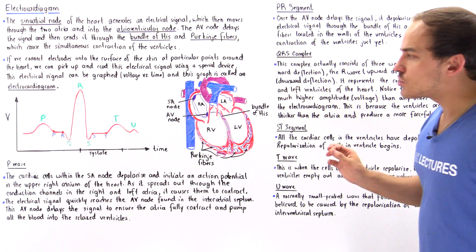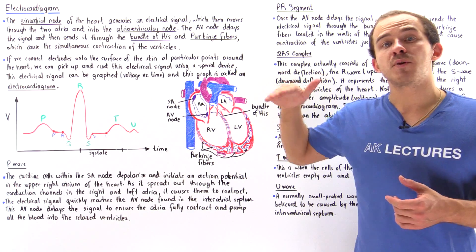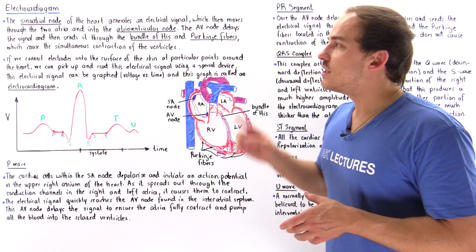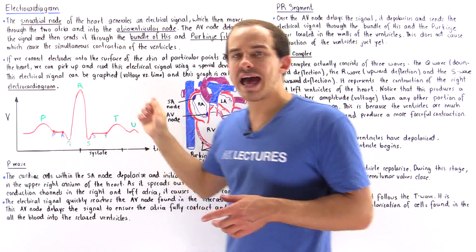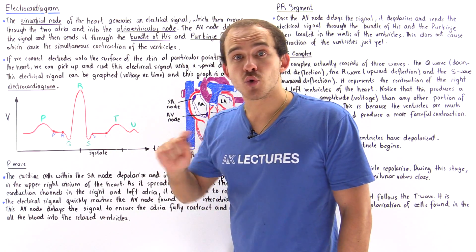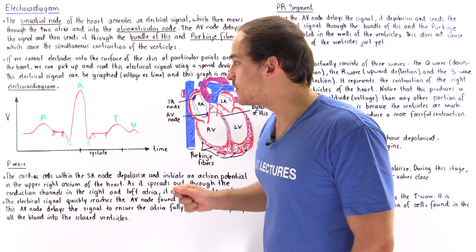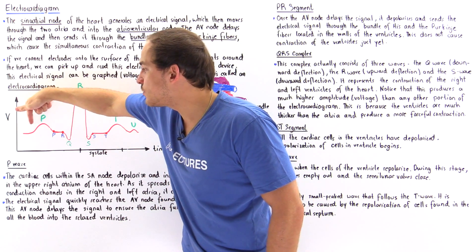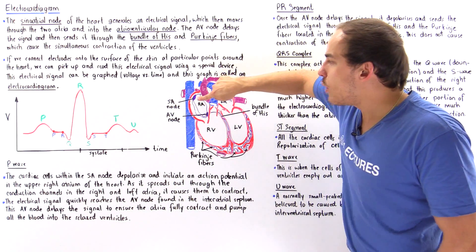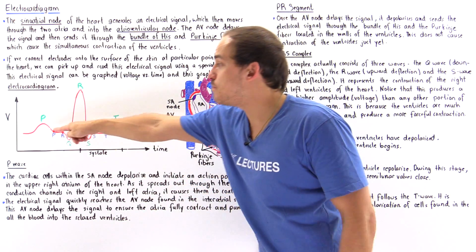The heart begins generating its electrical signal within the right atrium. In the upper wall of the right atrium, we have a collection of specialized cells collectively called the sinoatrial node, or SA node. The SA node contains cells whose membranes depolarize, creating an electrical potential difference — which is why we have an increase in voltage in this portion. When the SA node generates that action potential, it increases the voltage, making it more positive.